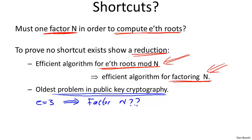What is known is that for e equals two — that is, if I give you an algorithm for computing square roots modulo n — then in fact that does imply factoring the modulus. So computing square roots is in fact as hard as factoring the modulus.